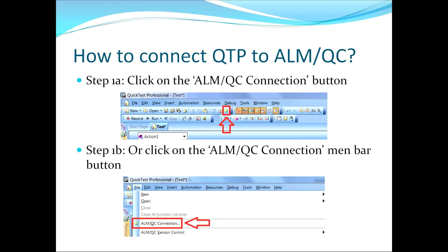This now moves us to our third topic, which asks the question: how do I connect to it? The first step to connect QTP to Quality Center is by telling QTP you would like to do so, and there are a couple of different ways. First, you can use the button bar — I show in step 1a the button that you need to click, which looks like a green arrow pointing into a circle. However, if you would like to use the menu bar instead, you can click the File button, then click the ALM QC Connection button.